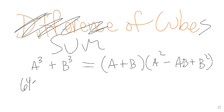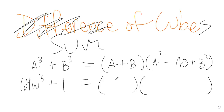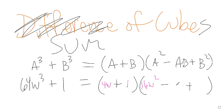What if I have 64W cubed plus 1? This is a sum of cubes. Set up your template. In the front, the cube root of 64W cubed is 4W, because 4W times 4W times 4W is 64W cubed. The cube root of 1 is just 1. Now fill out the trinomial: take 4W and square it to get 16W squared; in the middle, 4W times 1 stays 4W; and in the back, you square B — 1 squared is 1. That would be the factorization: (4W + 1)(16W² − 4W + 1).